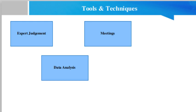Now we shall discuss the tools and techniques for this process. The first one is expert judgment. Expert judgment should be considered from individuals or groups with specialized knowledge or training in the following topics: previous similar projects, information in the industry discipline and application area, cost estimating and budgeting, and earned value management.